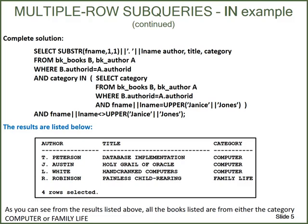Just one remark about subqueries that I haven't mentioned before: you can't say AND category IN and then SELECT last name, or AND last name IN and then SELECT first name. Where you specify the column in the main query, you have to select and compare the same column in the subquery. So: AND category IN SELECT category, or AND LNAME IN SELECT LNAME, or AND salary IN SELECT salary. The column in the main query and the SELECT in the subquery must be the same.